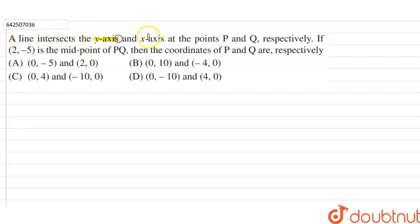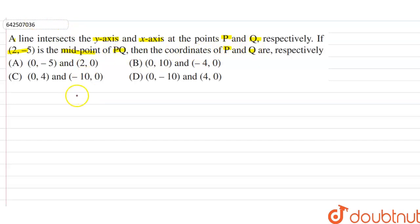Hi students, our question here is: a line intersects the y-axis and the x-axis at points P and Q respectively. If (2, -5) is the midpoint of PQ, then find the coordinates of P and Q respectively.